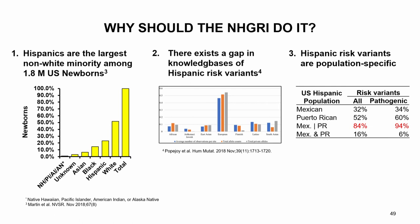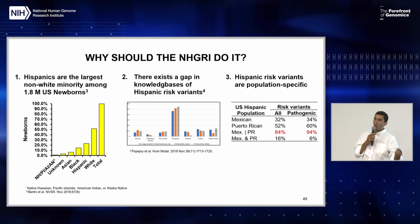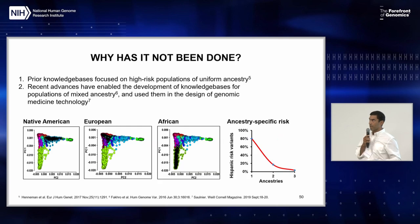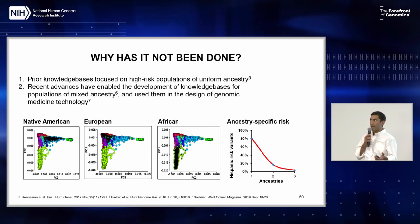Comparing two different U.S. Hispanic populations using Thousand Genomes Project data — Mexicans in Los Angeles and Puerto Ricans in Puerto Rico — we found that the vast majority of risk variants are population-specific: seen only in Mexicans or only in Puerto Ricans, but not both. When you focus on pathogenic ones, that's 94% of them. Prior knowledge bases focused on high-risk populations of uniform ancestry, but recent advances enable development of knowledge bases for populations of mixed ancestry.